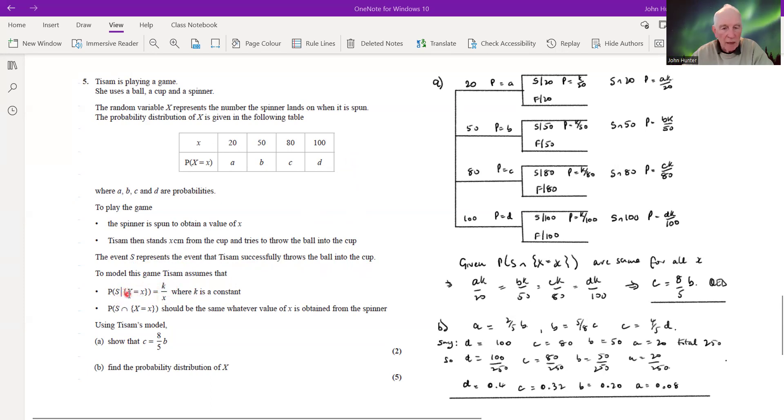Given a higher value on the spinner, the probability of success throwing it in is going to be smaller. And then this condition is given to us: the probability of success and the value on the spinner being x should be the same, whatever the value of x is obtained from the spinner.